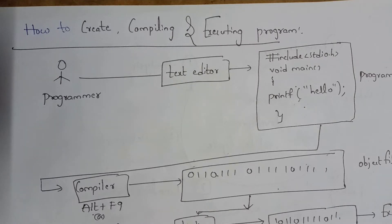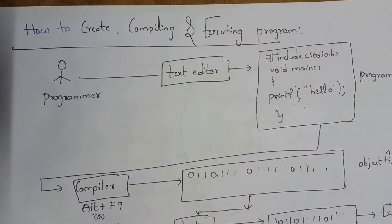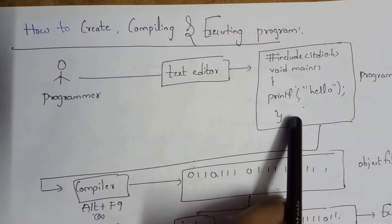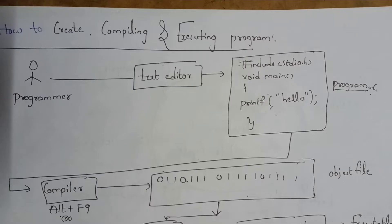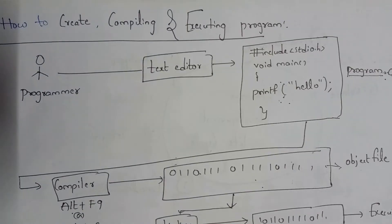First, I will explain how to create a program. To create a C program, you need to open a text editor. For example, Turbo C is a text editor. You open Turbo C, write your program, and then save it with a .c extension. Here I am saving my program with the name program.c.